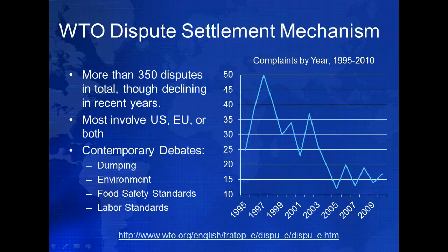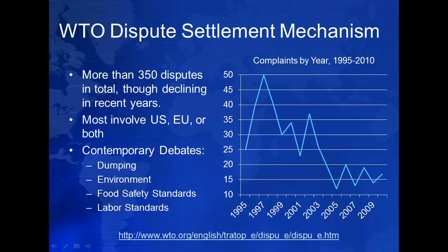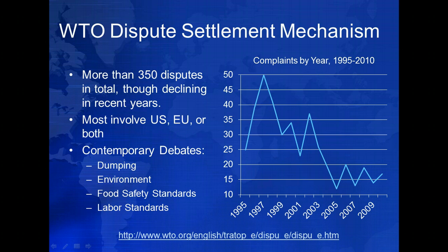Most disputes have centered on one of four key areas: dumping — the selling of goods below the cost of production — the protection of the environment, food safety standards, or labor standards. While all WTO members have equal standing to bring a dispute in theory, in practice the enforcement mechanism serves to undermine the utility of the panel for many developing countries. Because enforcement relies ultimately on the ability to impose countervailing tariffs, countries with larger economies are better positioned to enforce decisions. The United States, for example, cares very little about whether Costa Rica imposes higher tariffs on American exports, but Costa Rica cares a great deal about access to American markets. As a result, it is much less likely to file suit against the United States, because even if it wins, Costa Rica cannot afford to enforce the penalty.